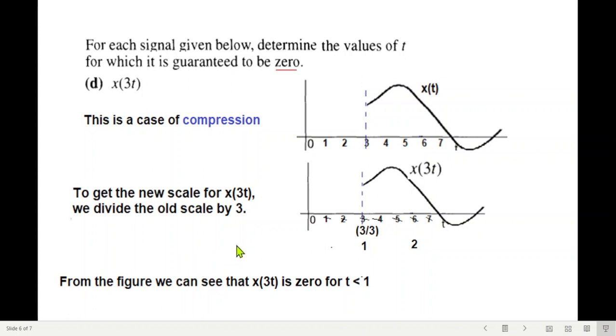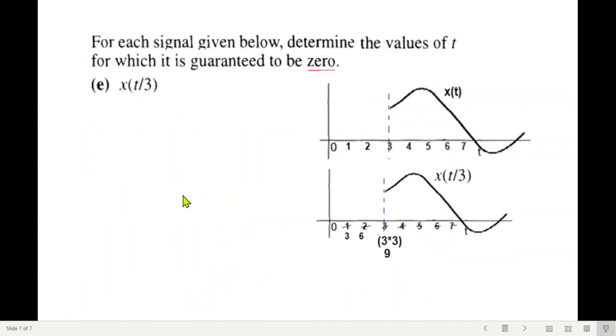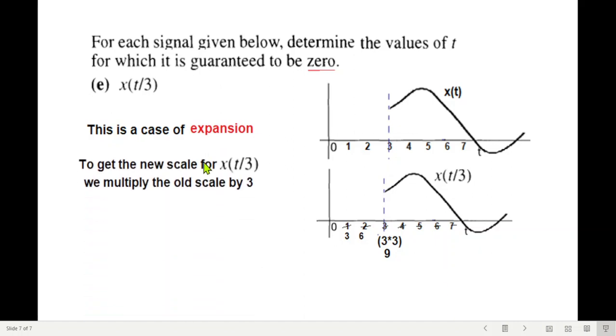And finally, now this is an expansion case, t by 3. So we'll do opposite of the compression. That is, there we were dividing, here we'll multiply. But to get x(t/3) we multiply the old scale by 3. So we multiply everything by 3, and so this is our starting point of the signal 9. Before this the signal is 0.